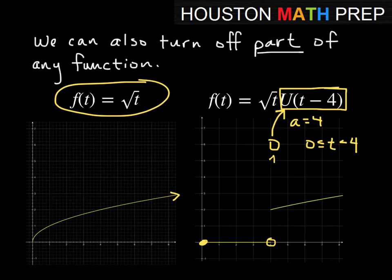And then the unit step function is going to have a value of 1 once we hit time is 4 seconds and greater than 4 seconds. So as soon as we hit t equal to 4, we're going to jump up to the square root graph and have the original square root graph from then on. If you multiply that square root of t by the number 1, you get back the original function. So you have that off-on switch that you can create using unit step function, multiplying it by any function you like.